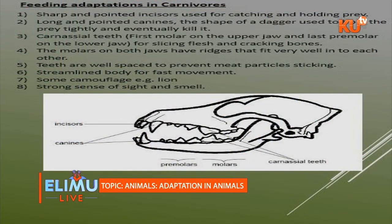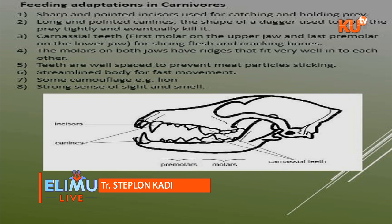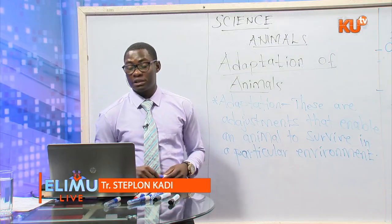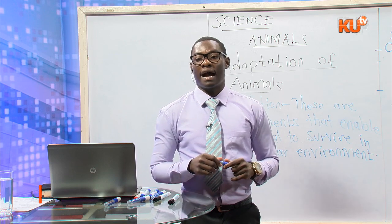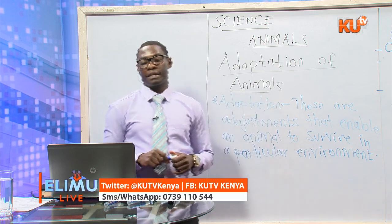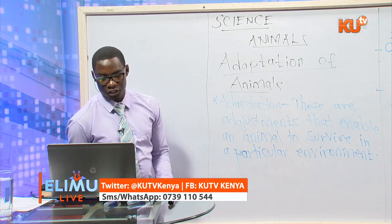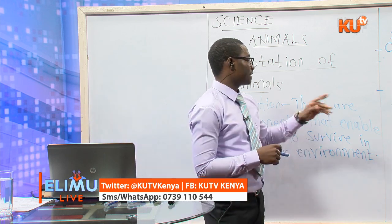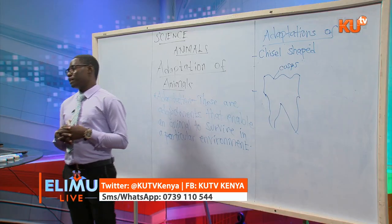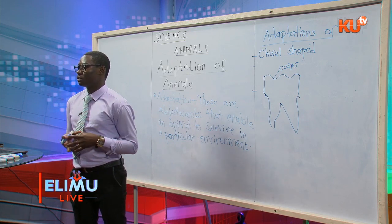They also have carnassial teeth. Carnassial teeth are the first molars on the upper jaw and the last premolars on the lower jaw. Their purpose is to slice flesh and crack bones — that is a very common question in KCPE. Carnassial teeth are adapted premolars and molars, and their function is to crush bones and slice flesh. The molars also have cusps and ridges that fit into each other well to enable proper chewing.